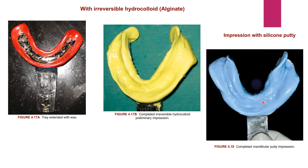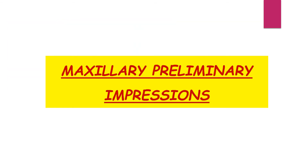For mandibular impressions with silicone putty, the procedure is similar to impression compound, except the material is supplied as a base and catalyst dispensed in equal quantities and kneaded. A non-perforated stock tray is used with a tray adhesive. The impression is removed in a snap. It is difficult to refine the impression, but pouring can be delayed. This completes the mandibular putty impression.